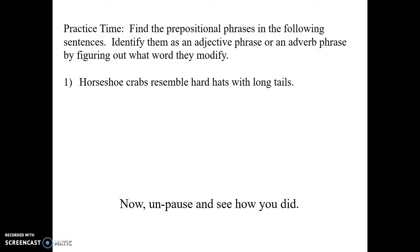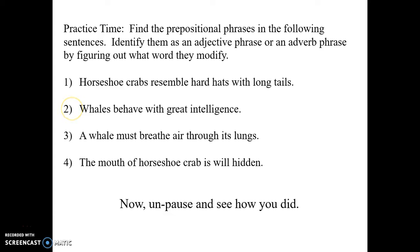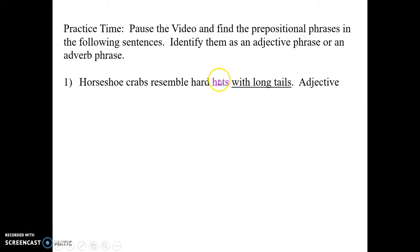Number one, horseshoe crabs resemble hard hats with long tails. Number two, whales behave with great intelligence. Number three, a whale must breathe air through its lungs. And number four, the mouth of a horseshoe crab is well hidden. Pause if you need to and find the prepositional phrases. Just think it through. What are the prepositional phrases and what do they modify?